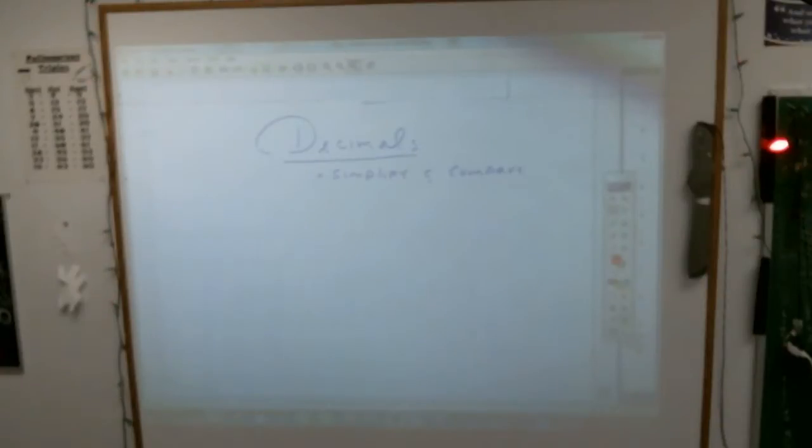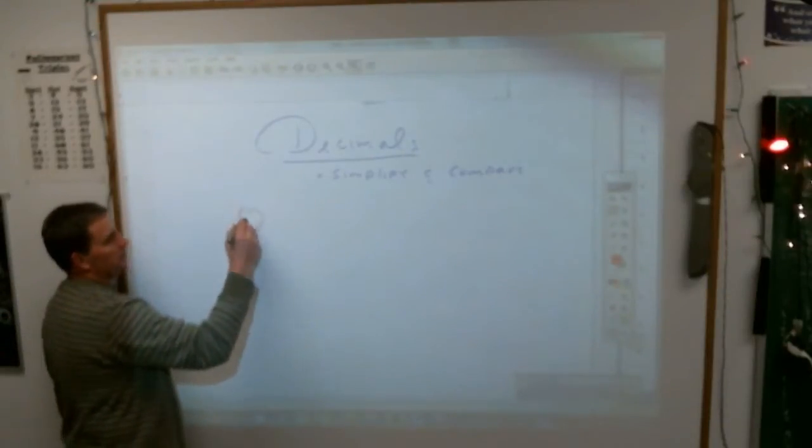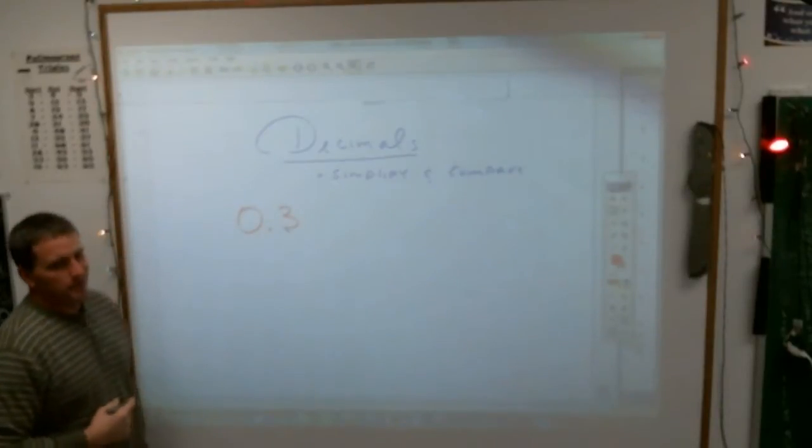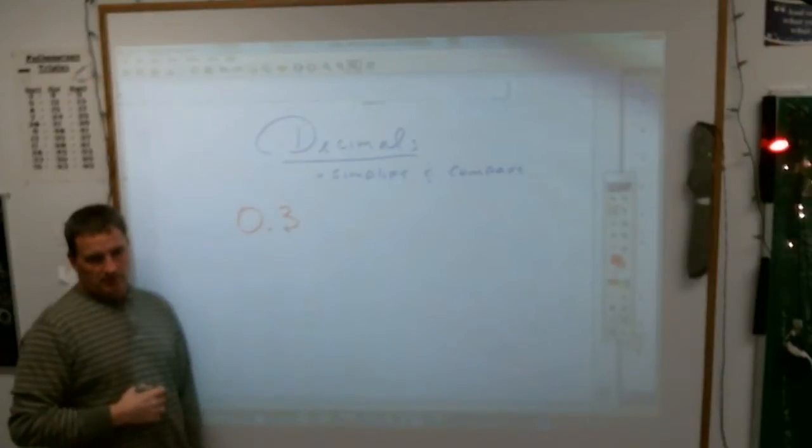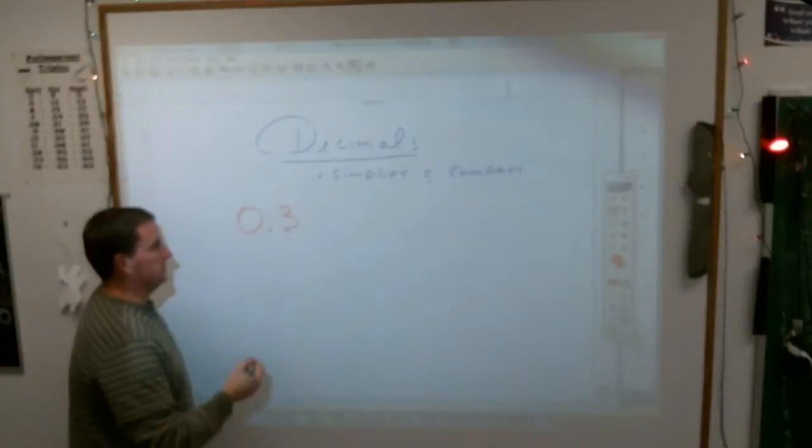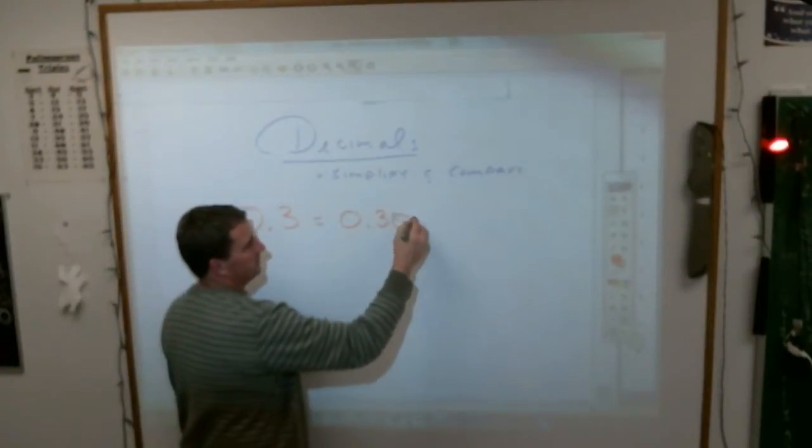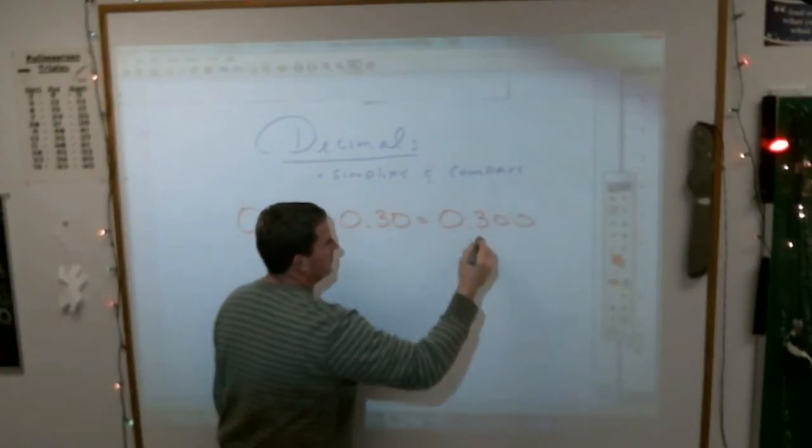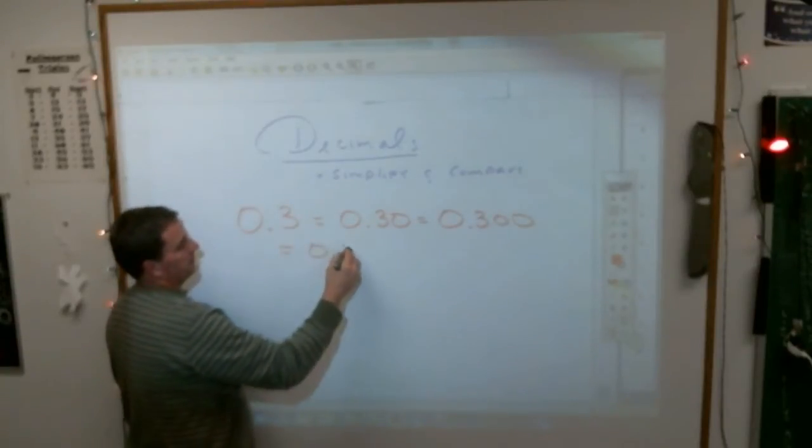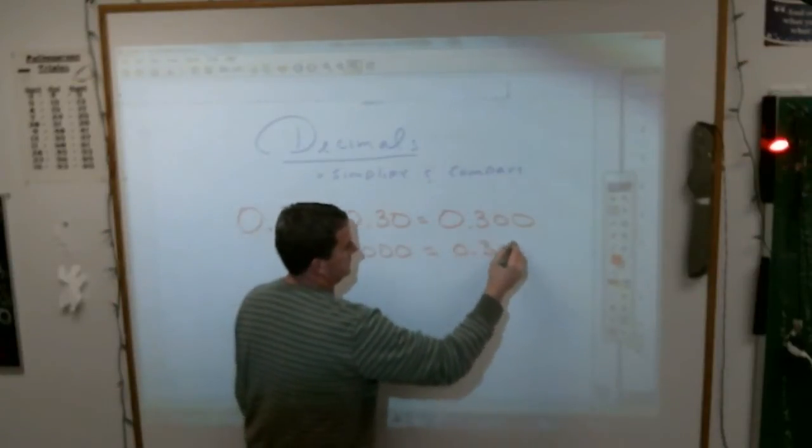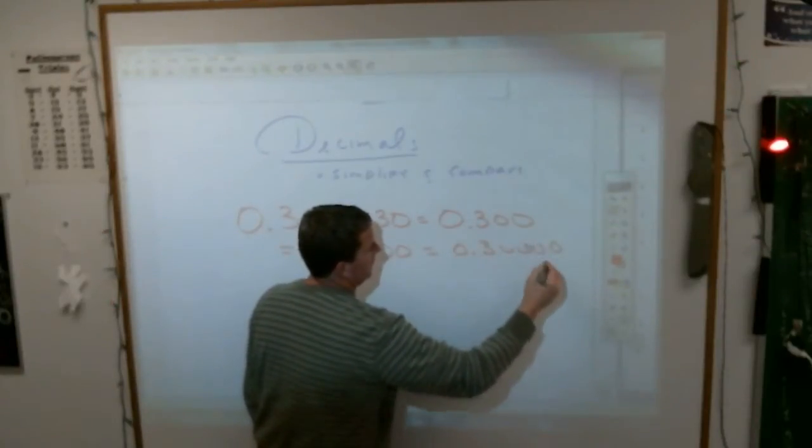The gist of it boils down to this: if you have 0.3, you can add as many zeros at the end of that and not change really what it means. In other words, 0.3 equals the same as 0.30 equals 0.300 equals 0.3000 equals 0.30000, blah blah blah, whatever.